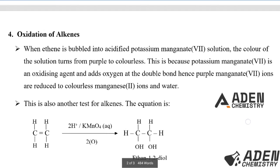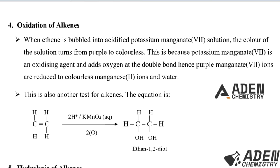Next, we go to the fourth chemical property of alkenes, which is the oxidation of alkenes. When ethene is bubbled into acidified potassium manganate(VII) solution, the color of the solution turns from purple to colorless — the acidified potassium manganate(VII) solution is decolorized. This is because potassium manganate(VII) is an oxidizing agent and adds oxygen at the double bond, so the purple manganate(VII) ions are reduced to colorless manganese(II) ions and water.